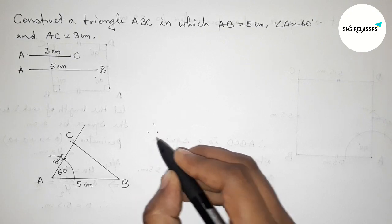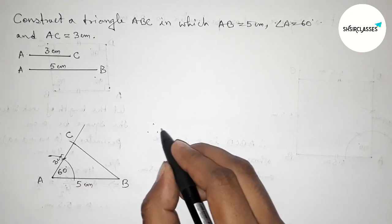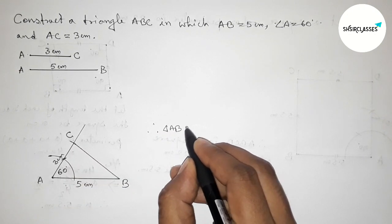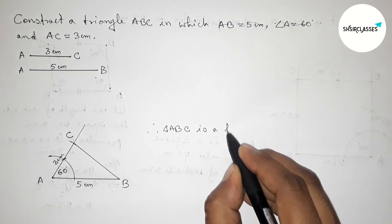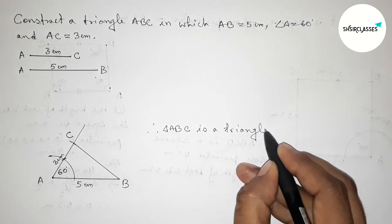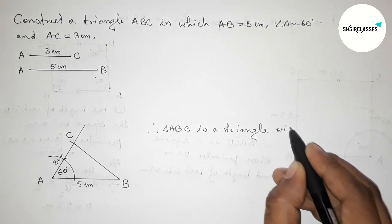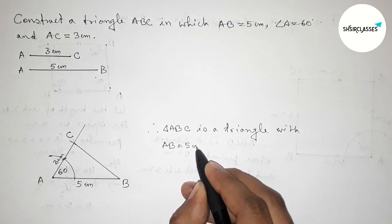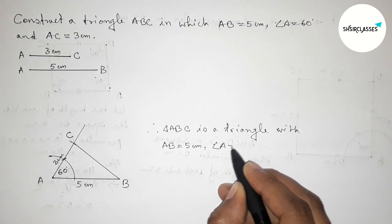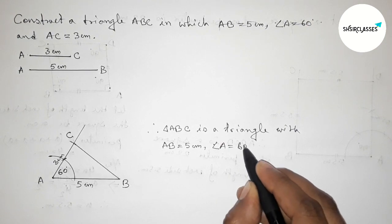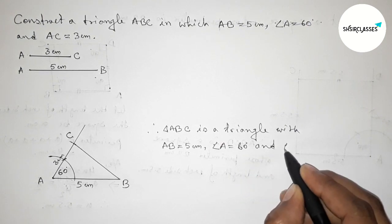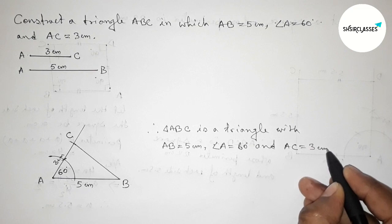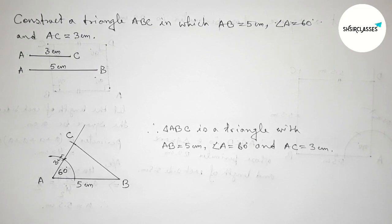Joining side BC to complete triangle ABC. The side AC equals 3 centimeters. Therefore, triangle ABC is constructed with AB equals 5 centimeters, angle A equals 60 degrees, and AC equals 3 centimeters. That's all — thanks for watching. If this video is helpful, please share it with your friends.